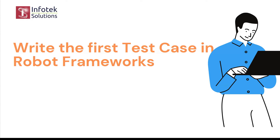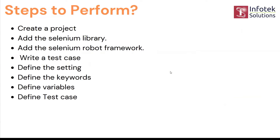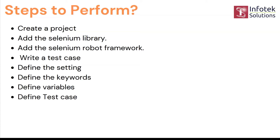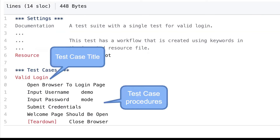These are the steps: first we'll create a project, second we will add Selenium library, third we will add Selenium Robot Framework, then we are going to write a test case. There are four sections: Settings, Keywords, Library, and Test Cases. You will have these four sections every time when you're writing test cases. This is how the test cases look — just a glimpse of how they are written.